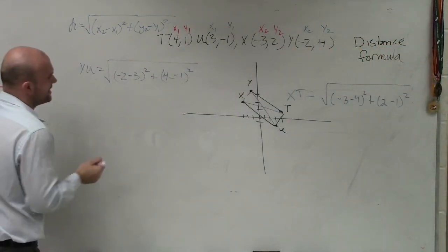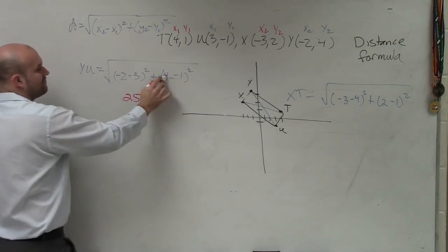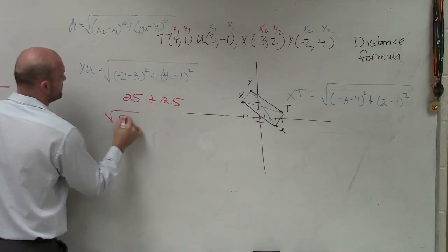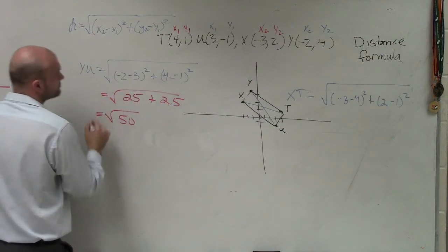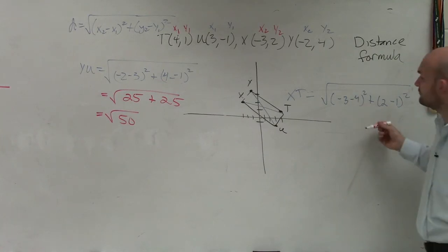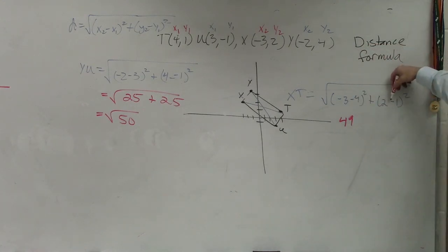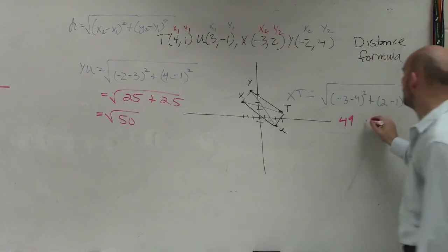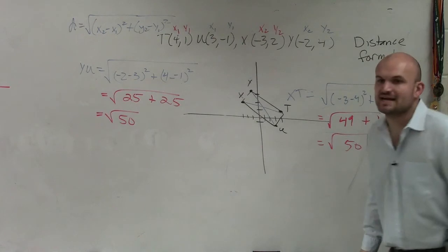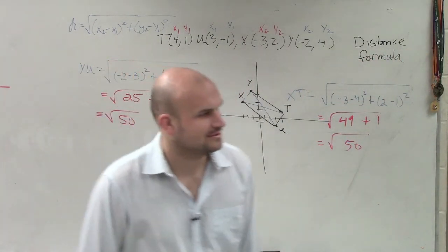I'll simplify: negative 2 minus 3 is negative 5, negative 5 squared is 25. Plus, 4 minus negative 1 becomes 5, 5 squared is 25. So I have the square root of 50. Over here: negative 3 minus 4 is negative 7, negative 7 squared is 49. 2 minus 1 is 1, 1 squared is 1 — so also the square root of 50. Therefore, their diagonals have the same distance. Does that mean it's a rectangle? Of course it does.